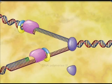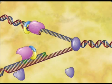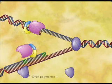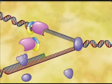When the DNA polymerase 3 reaches the RNA primer on the lagging strand, it is replaced by DNA polymerase 1, which removes the RNA and replaces it with DNA.